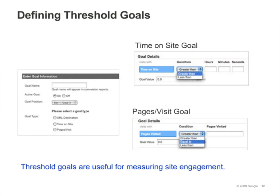To define a pages per visit goal, select pages per visit as the goal type. Next, select greater than, equal to, or less than and enter a number of pages. Threshold goals are useful for measuring site engagement, whereas URL destination goals are best for measuring how frequently a specific activity has been completed. If your objective is for visitors to view as much content as possible, you might set a pages per visit goal. Or, if you have a customer support site and your objective is for visitors to get the information they need in as short a time as possible, you might set a time on site goal with a less than condition.